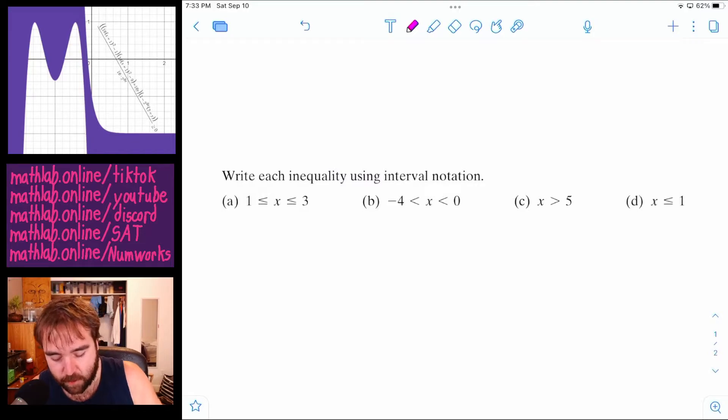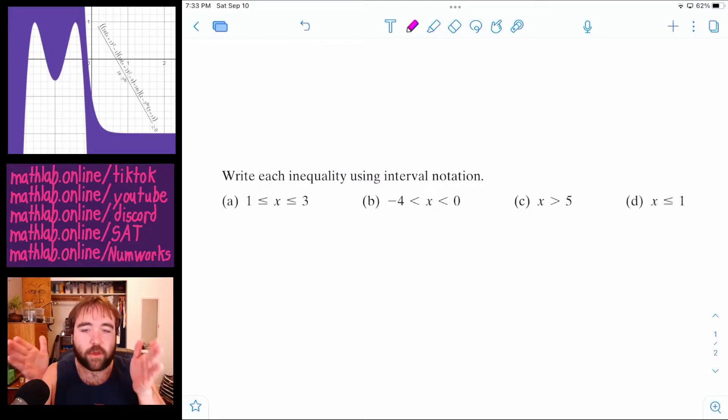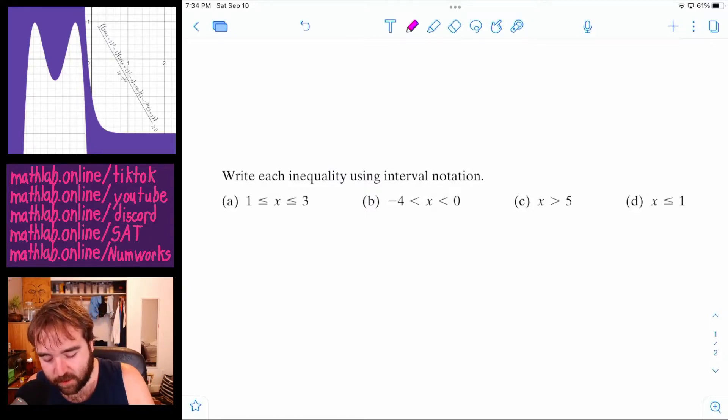So let's start with a. We're going to say, and I really like how they write it with this x in between one and three, because that's exactly what x can be here. The smallest thing x can be is one, the biggest thing x can be is three.